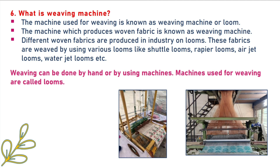Last question: what is a weaving machine? The machine used for weaving is known as a weaving machine or loom. The machine which produces woven fabric is known as a weaving machine. Different woven fabrics are produced in industry on weaving machines. These fabrics are woven using various looms like shuttle looms, rapier looms, air jet looms, water jet looms, etc. Weaving can be done by hand or by using machines. Machines used for weaving are called looms.